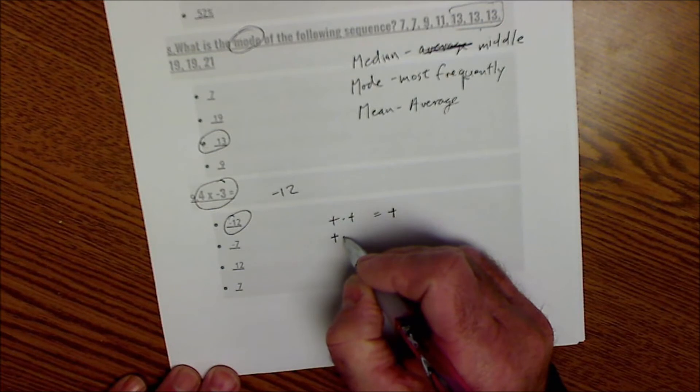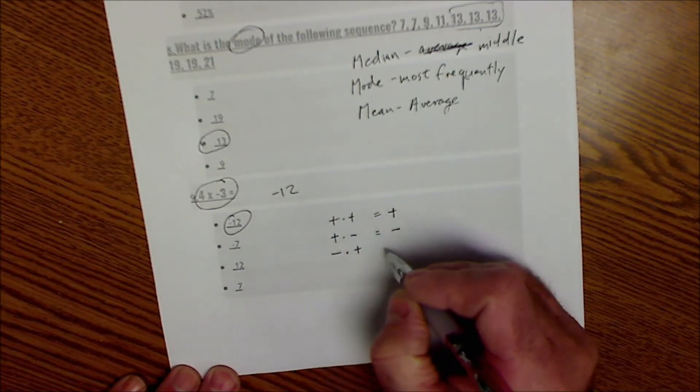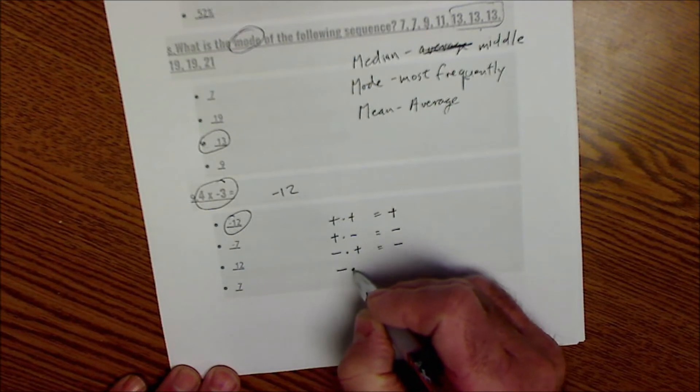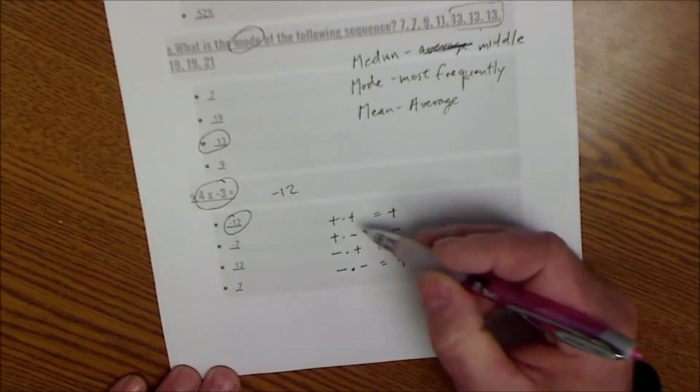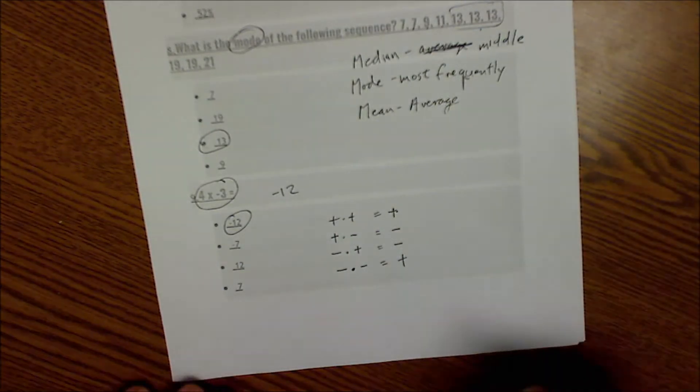Positive times a negative is negative. Negative times a positive is negative. Negative times a negative is positive. So if they're the same, it'll work out to be positive. If they're different, it'll work out to be negative.